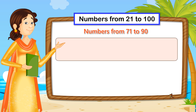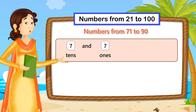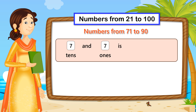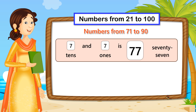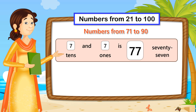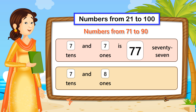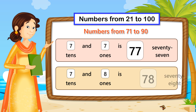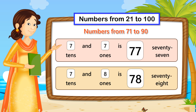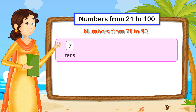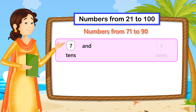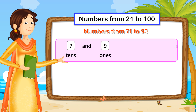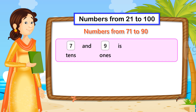7 tenths and 7 ones is 77. 7 tenths and 8 ones is 78. 7 tenths and 9 ones is 79.